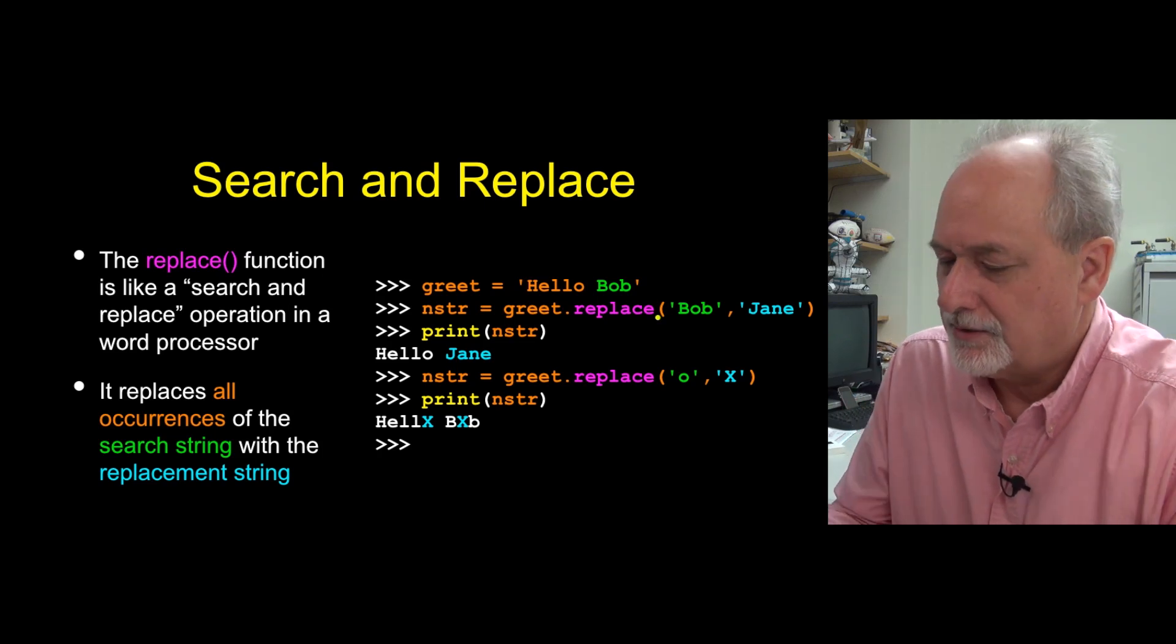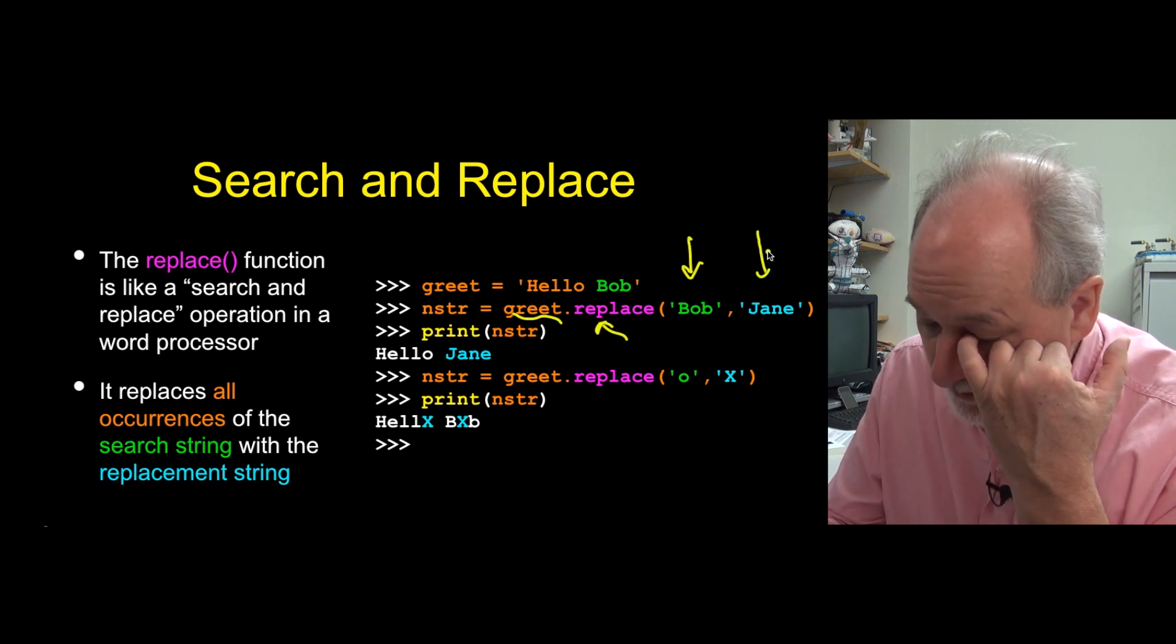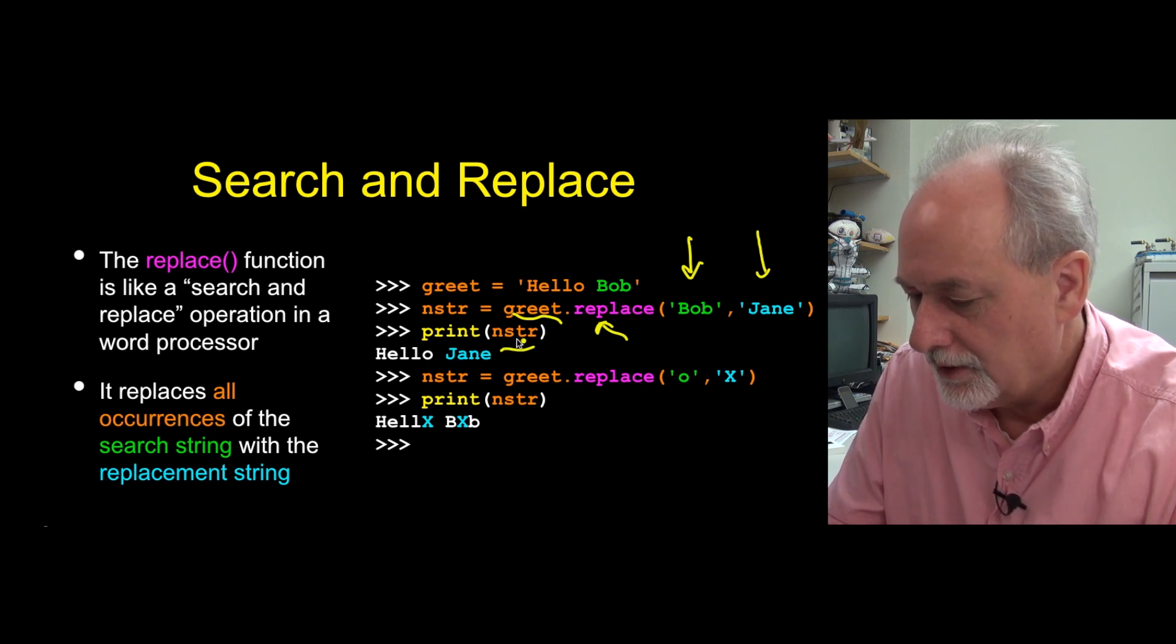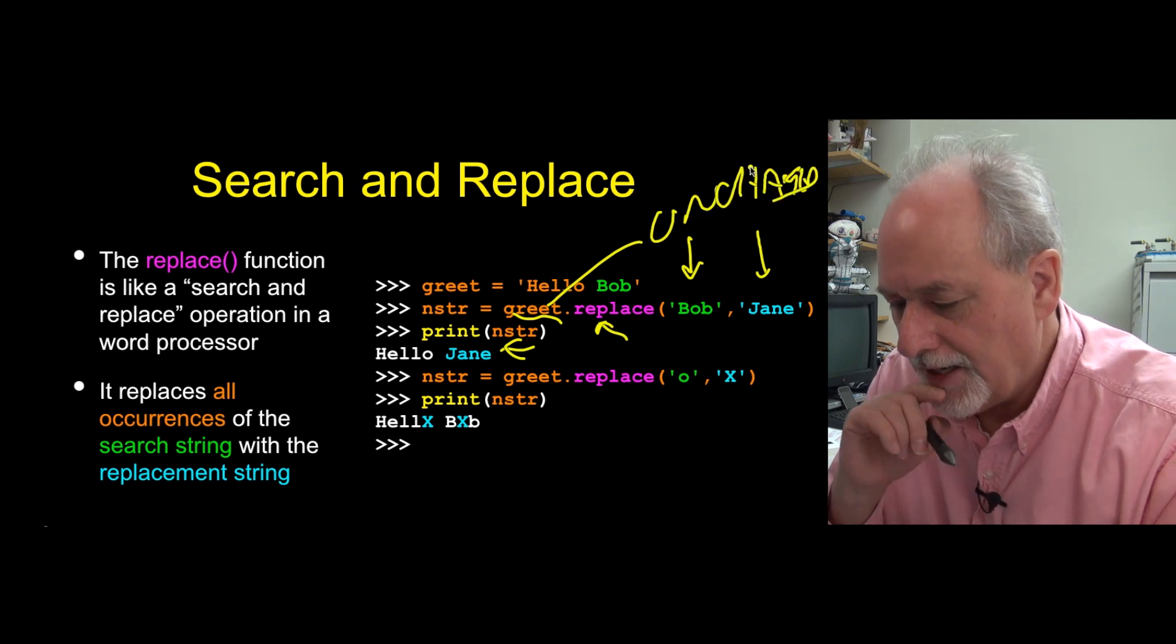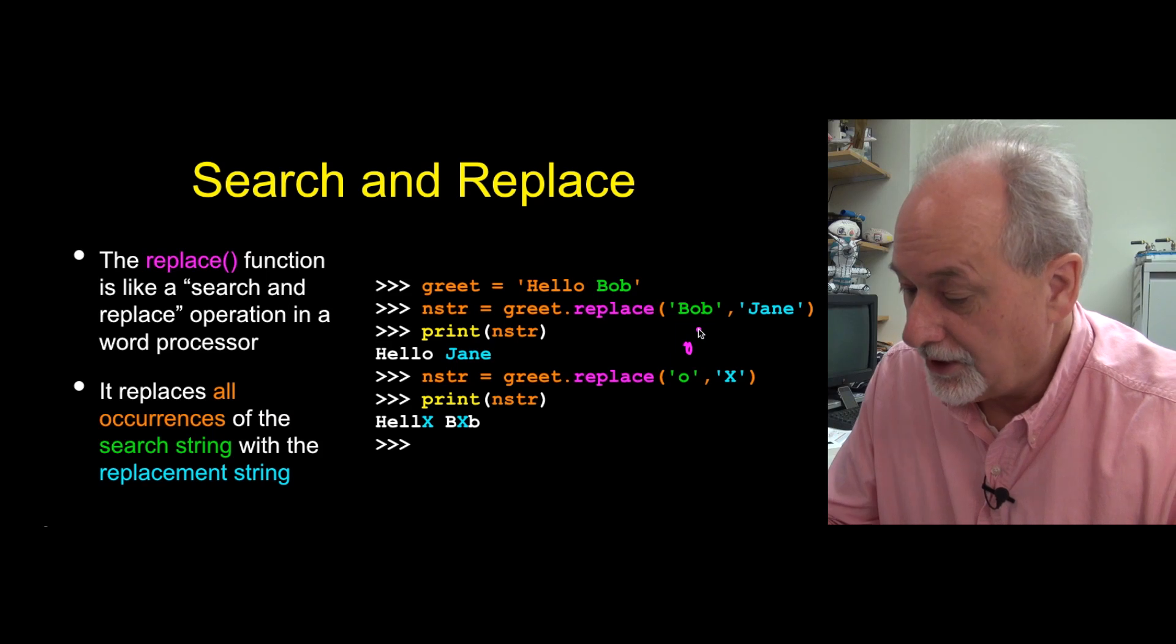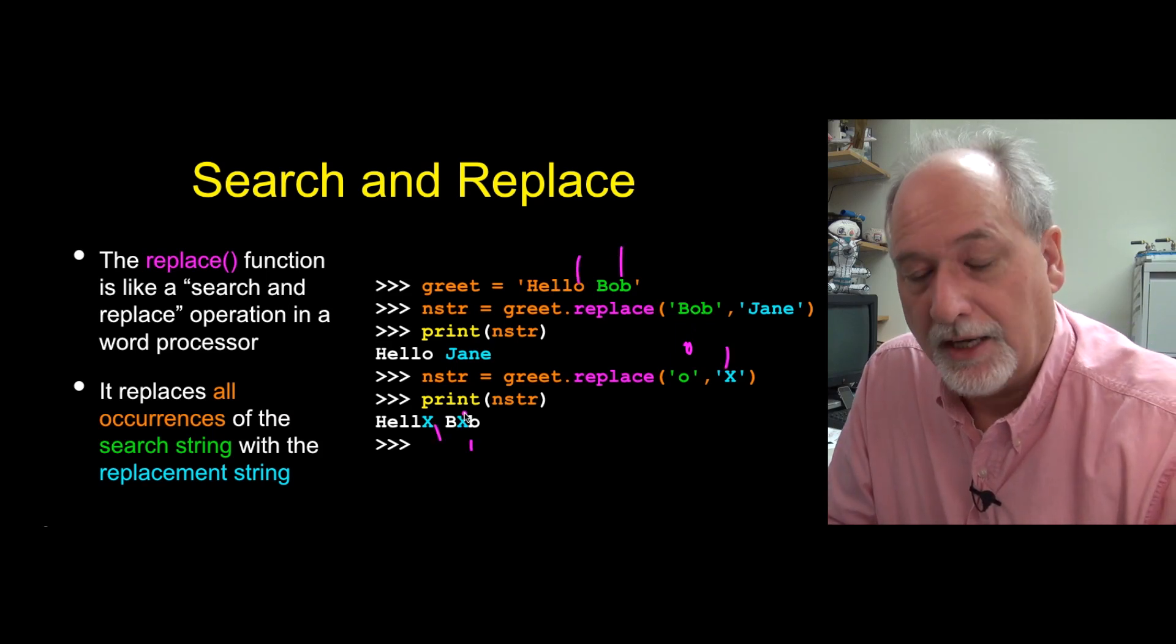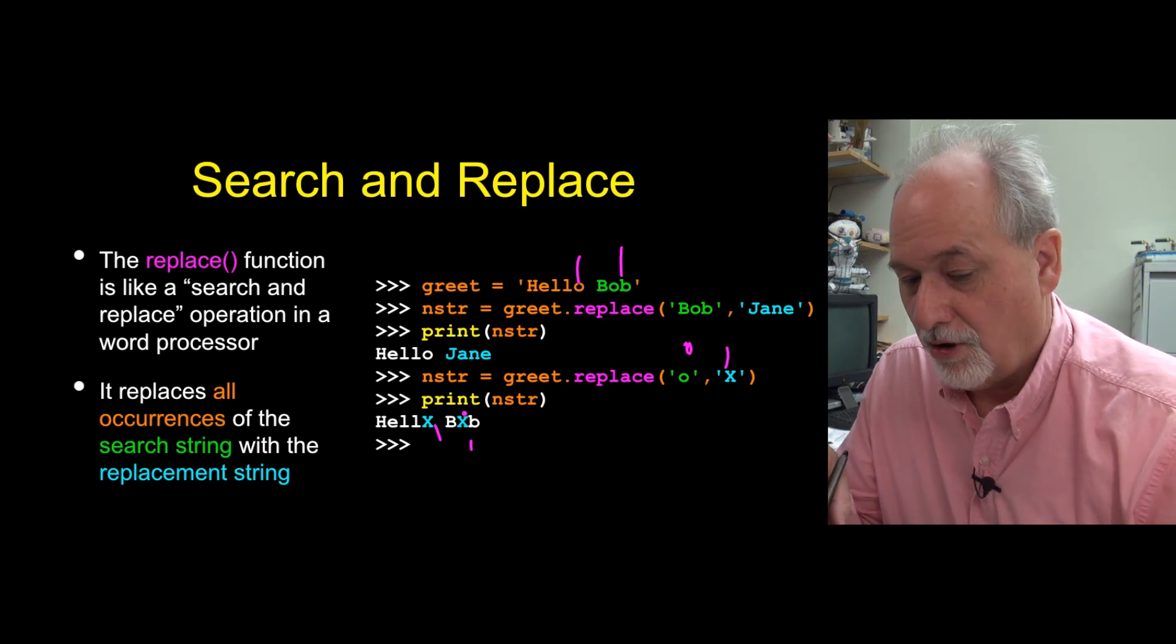Search and replace is super useful, super duper useful, and it's pretty clean. Here we have a string and we use the replace method. In this case we're passing in the old and the new - replace all Bobs with Jane's. That takes 'Hello Bob' and turns it to 'Hello Jane'. Again, greet is unchanged. It does more than one thing. This says go find all the O's and replace all the O's with X's. It goes and finds two of them and out come two X's. So that really is a replace - it's not just replace the first one, but replace all of them.